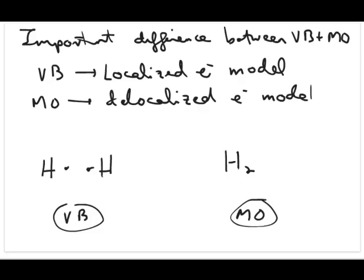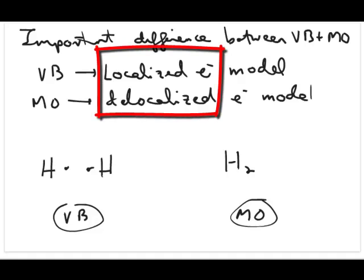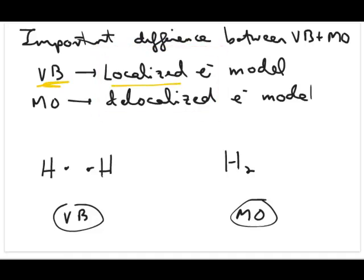So one key word that's often used to distinguish between the valence bond and the molecular orbital model is these words localized and delocalized. So the valence bond model is often called a localized electron model,